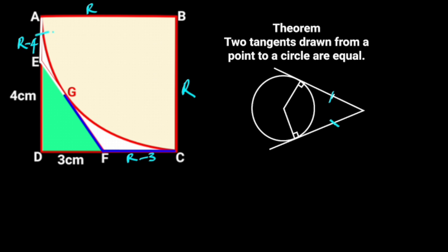So we can say line AE is equal to line EG, and line FG is equal to line FC. That is to say that AE is equal to EG, which is equal to R-4. Also, FG is equal to FC, which is R-3.